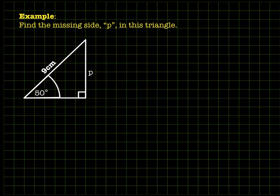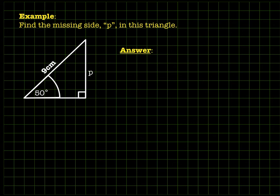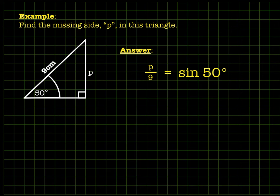For example: find the missing side p in a 50 degree triangle. The side p is opposite the 50 degrees and the hypotenuse is 9 centimeters. So we write p divided by 9 equals sine 50 — the opposite side divided by the hypotenuse gives the sine of the angle for any 50 degree triangle. Punching sine 50 into a calculator gives us 0.766.